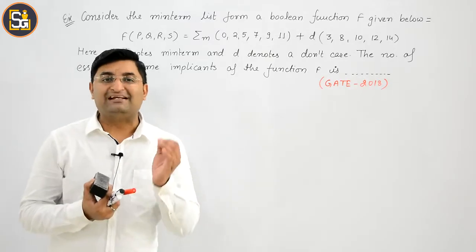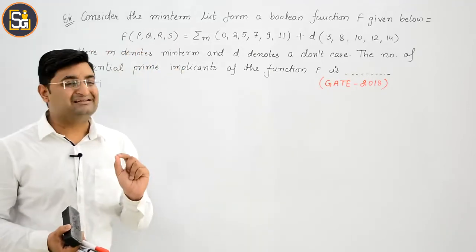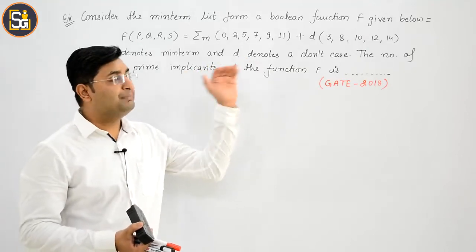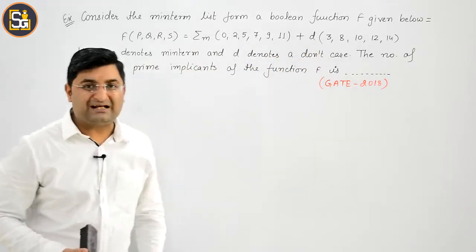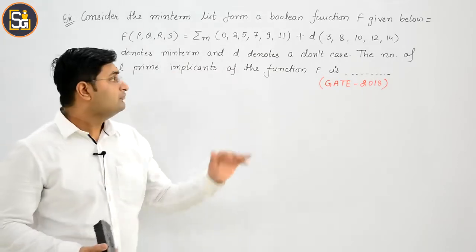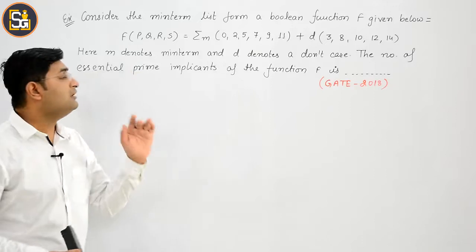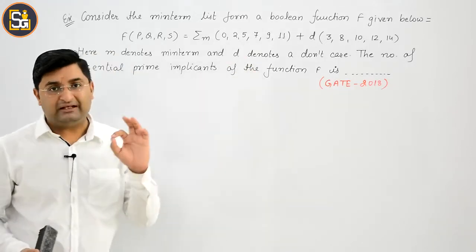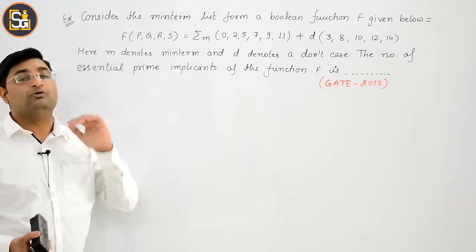Come to the next example. Consider the minterm list from a boolean function f given below, where m denotes minterm and d denotes don't care. The question asks for the number of essential prime implicants of function f. This is a GATE 2018 question.